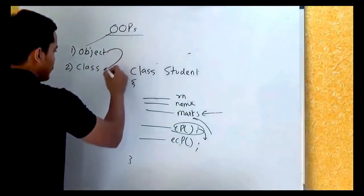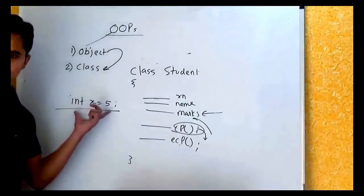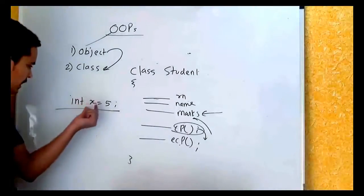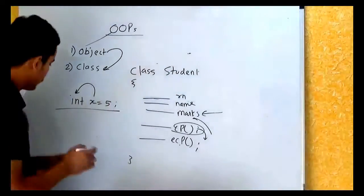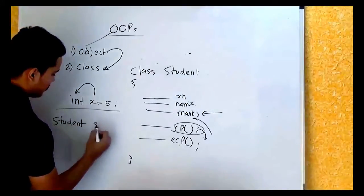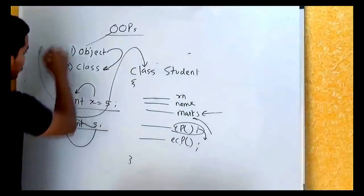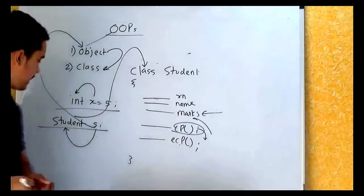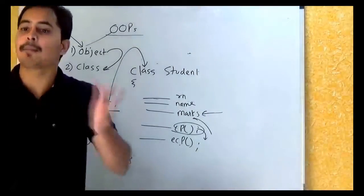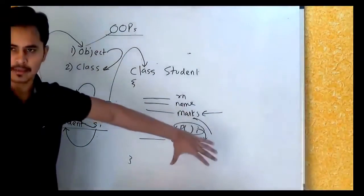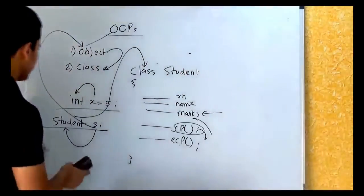An object is an instance of type class. Just like you say 'int x = 5' — where x is a variable of type int — similarly, if you want to create an object of student, you say 'Student s,' where Student is the class and s is the object. So an object is an instance of type class. A class is used to create the specification — it's a template or a plan. Once you write a class, you can create any number of objects of that class, and they will all have the same type.